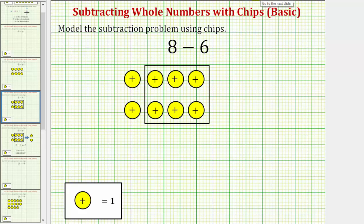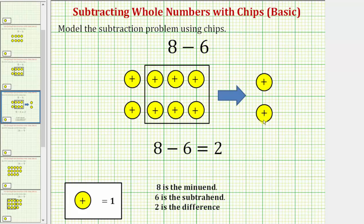Once we do this, we are left with 2 positive chips, which shows 8 minus 6 equals 2. And again, 8 is the minuend, 6 is the subtrahend, and 2 is the difference.